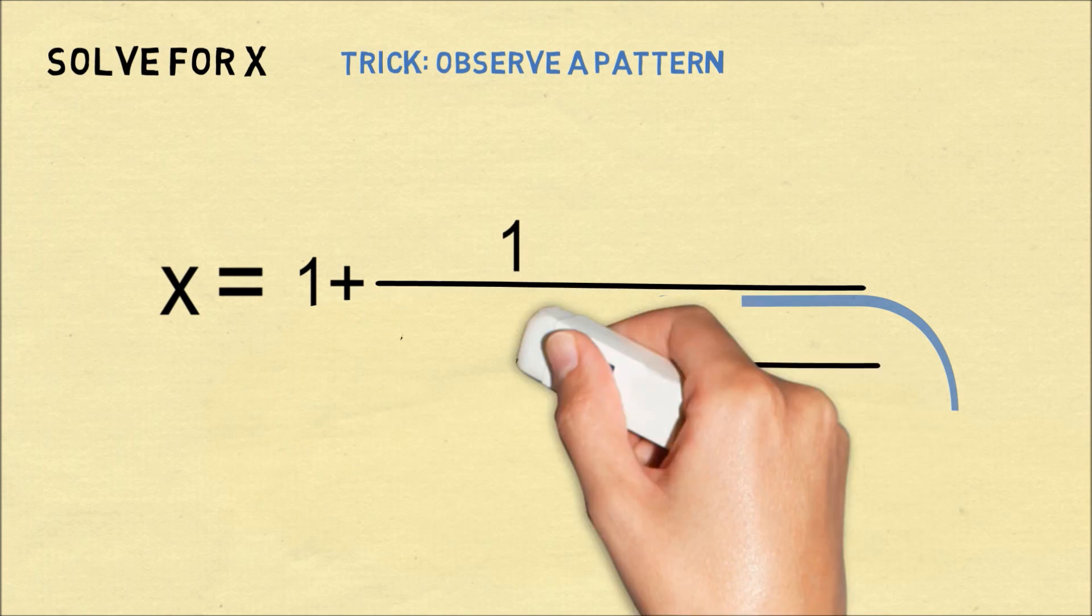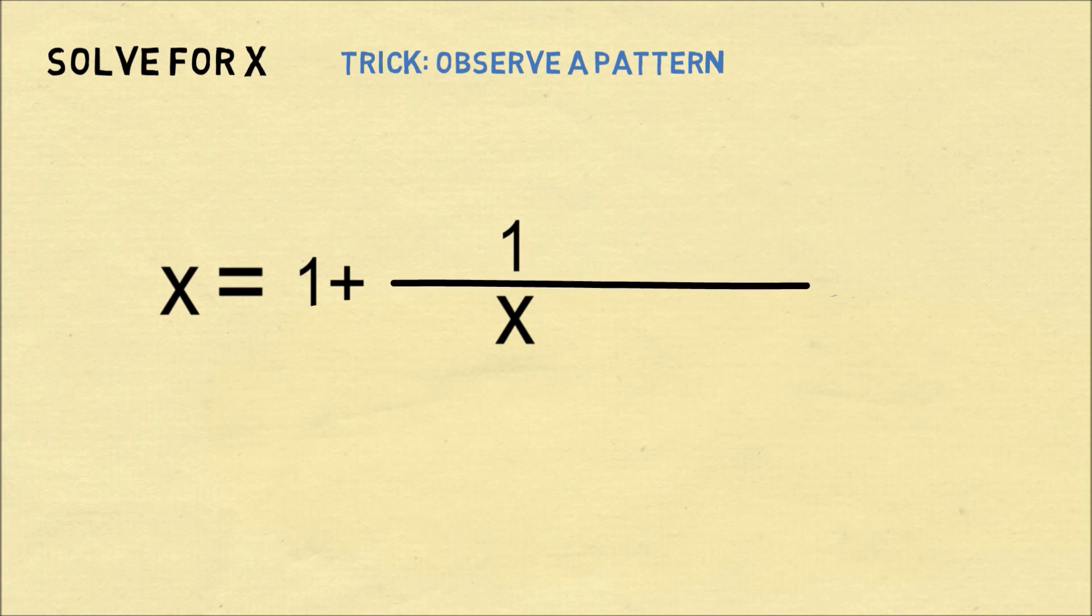This means that we can replace everything under the denominator with the variable x. And thus we have the equation x equals 1 plus 1 over x.